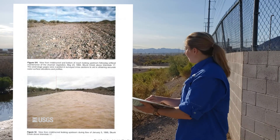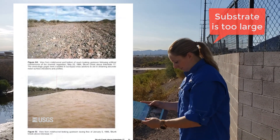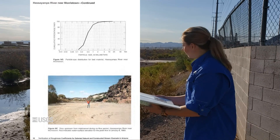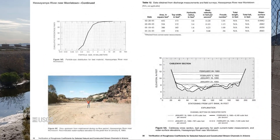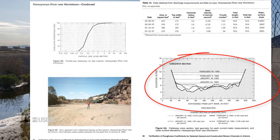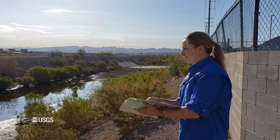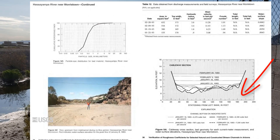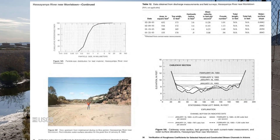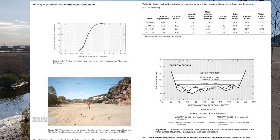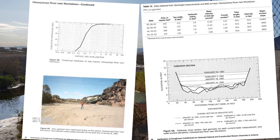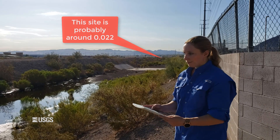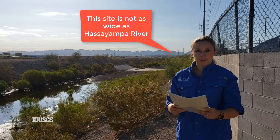Skunk Creek above Interstate 17 looks similar to this channel, although the substrate is definitely larger than what I'm seeing at this site. Hassayampa River near Morristown looks very promising. They calculated four roughness coefficients for this site for flow depths ranging from about 3 to 6 feet. My depth of flow for this channel was about 3 feet, so it appears we have something comparable. The comparison site is nearly 200 feet wide, and my site is not nearly as wide, so my site should have a slightly higher roughness than the comparison site. The verified roughness coefficient for Hassayampa River near Morristown was 0.018, and I make a judgment that my site probably has a roughness coefficient of around 0.022, which I increased based on the fact that my site is not nearly as wide.